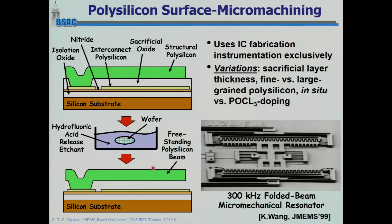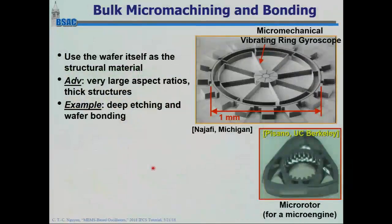That's an example of a popular MEMS surface micromachining process — companies like Analog Devices have used polysilicon surface micromachining. There's also bulk micromachining. In bulk micromachining, instead of depositing your structural layers, you actually use the silicon wafer itself as your mechanical material.